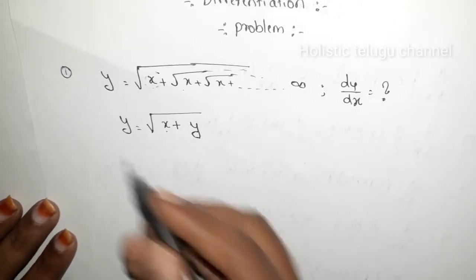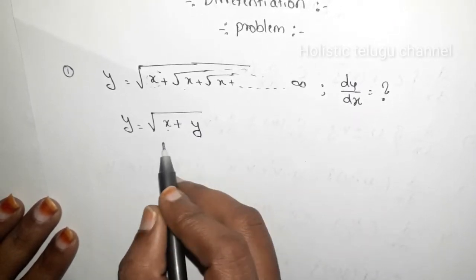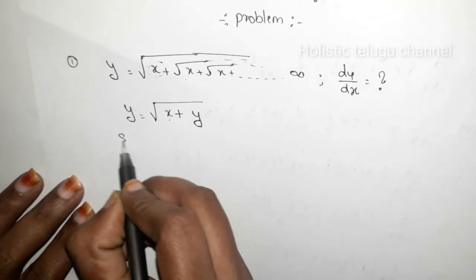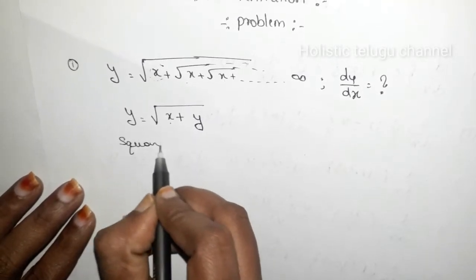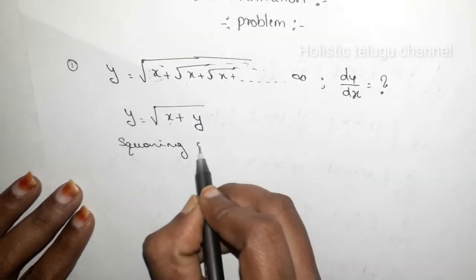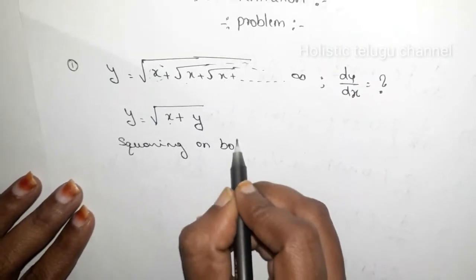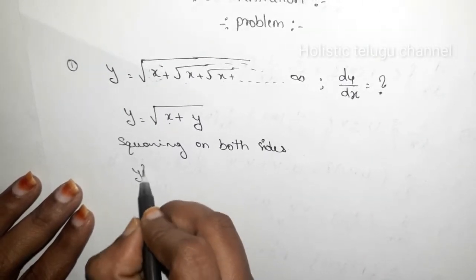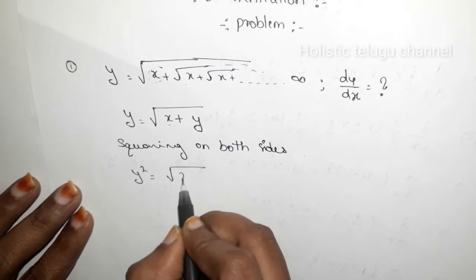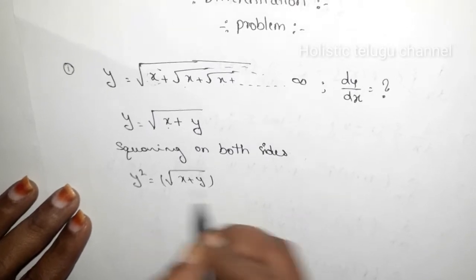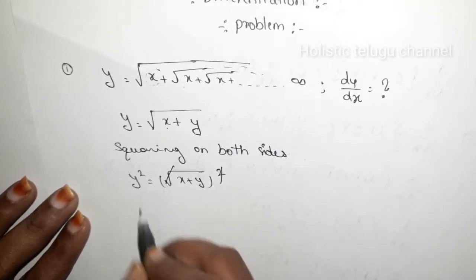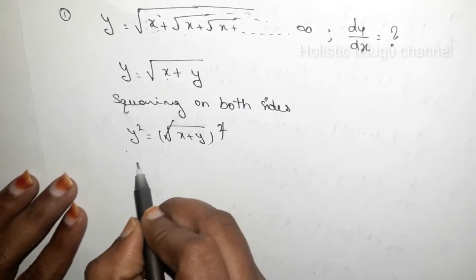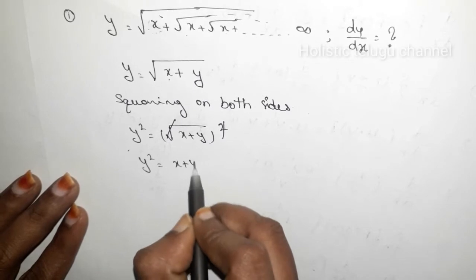We find out that y is equal to root over x plus y and so on to infinity. The square root cancels, so now we have y squared equal to x plus y.